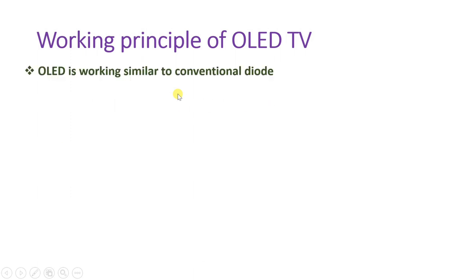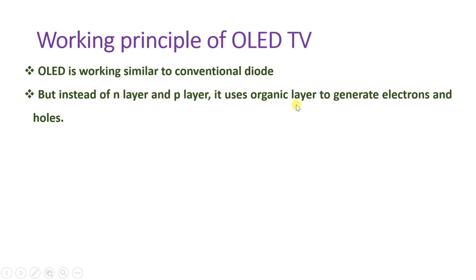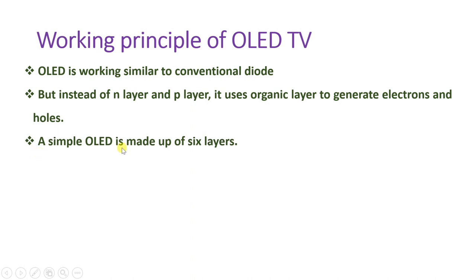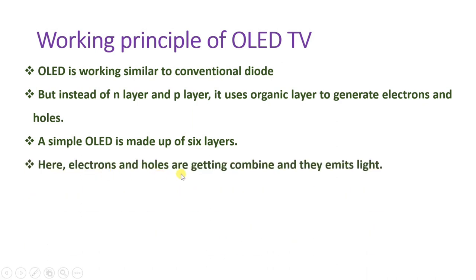Now let us see the working principle of OLED. The working principle is similar to a conventional diode: in a conventional LED, there is a cathode and anode; when you give a signal to the anode with respect to the cathode, it comes into forward bias, and electrons from the cathode move towards the holes of the anode and combine, generating light. In OLED, instead of N and P layers, organic layers are used to generate electrons and holes. A simple OLED is made up of 6 layers, and electrons and holes combine to emit light.